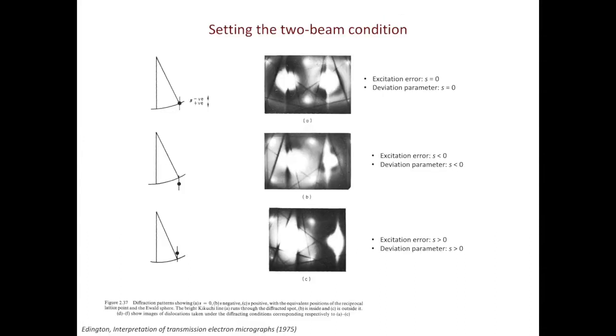When doing dislocation imaging, it's always nice to set up the two-beam condition. However, there are more details on how you can actually set that up. For example, in the first case, you have the bright Kikuchi line going through the center of the diffracted beam. In this case, both the excitation error and the new concept called deviation parameter are equal to zero. To me, both the excitation error and the deviation parameter are the same thing. That's why we use only one letter S to represent both.